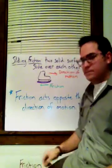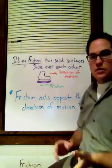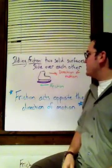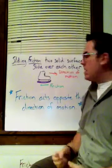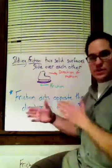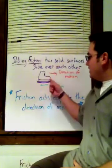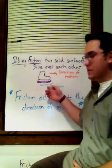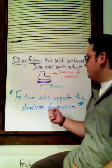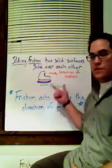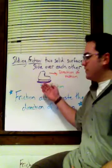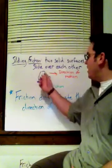There are four types of friction, starting with the one we deal with a lot — sliding friction. Two solid surfaces slide over each other. For instance, an ice skate over a rink: it's the solid surface of the blade going over the solid surface of the ice. Friction acts opposite the direction of motion. So if the ice skater's going this way, the friction is pushing opposite to it. The friction of the ice skate pushing backwards is what allows the ice skater to move.